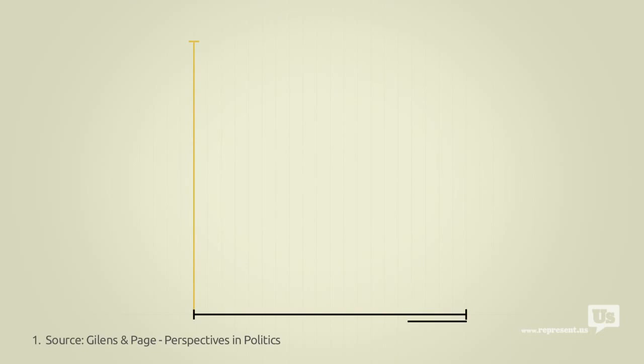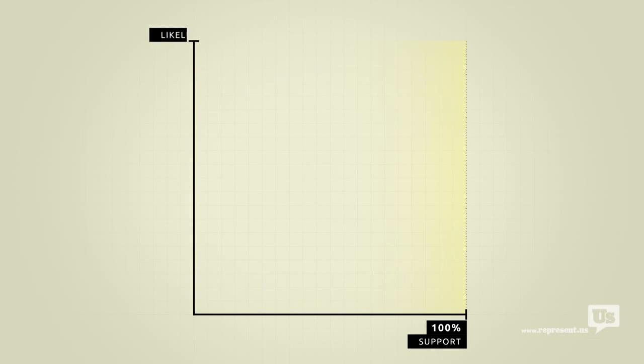This axis here represents public support for any given idea. On the left at 0% are ideas that not a single American wants. On the right at 100% are ideas that everyone supports. This axis represents the likelihood of Congress passing a law that reflects any of these ideas, from a 0 to a 100% chance.